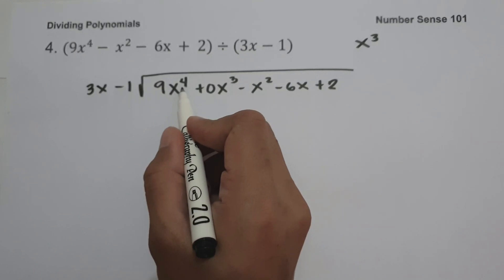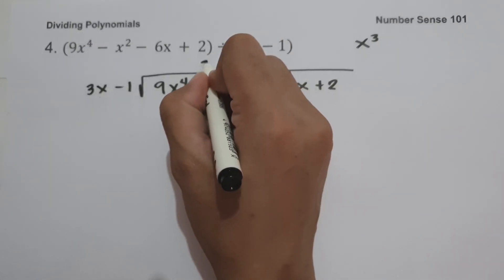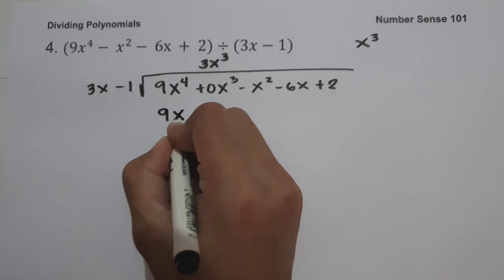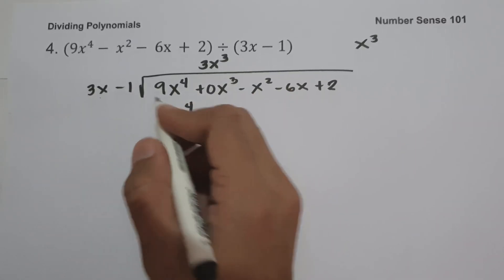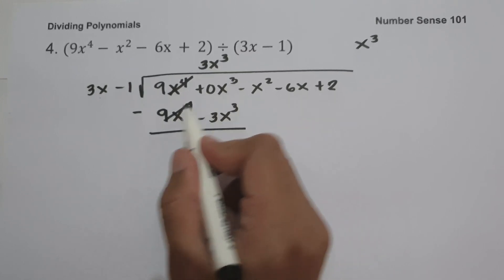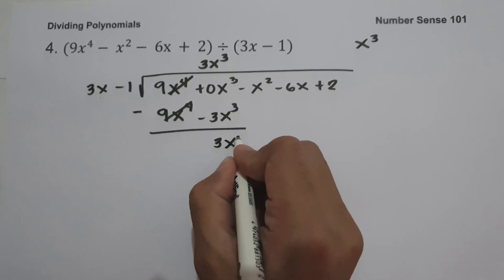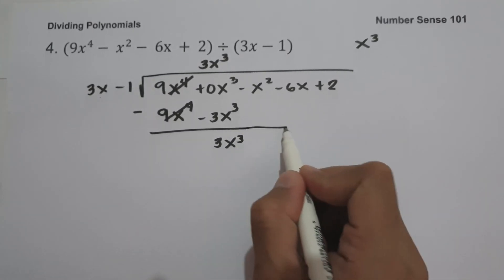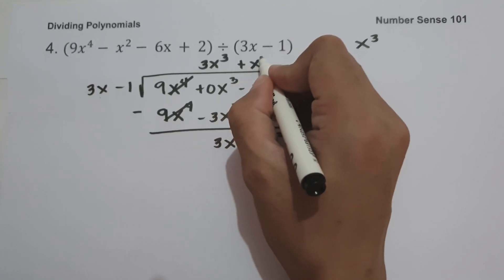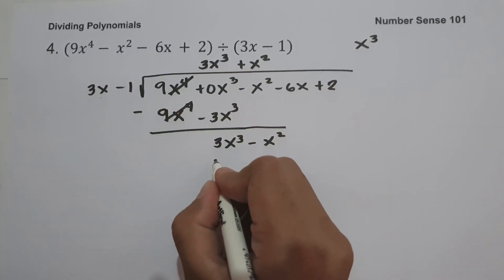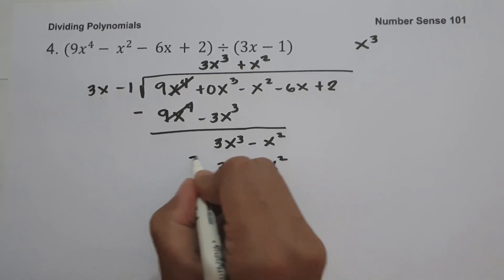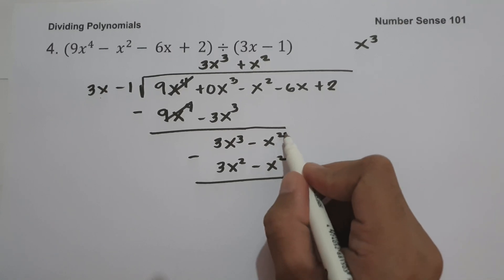So let us have 9x raised to 4 divided by 3x, which gives us 3x cubed. Then 3x cubed multiplied by 3x is 9x raised to 4, and 3x cubed multiplied by negative 1 is negative 3x cubed. Subtracting: 0x cubed minus negative 3x cubed gives us positive 3x cubed. Then 3x cubed divided by 3x is x squared. And x squared multiplied by 3x is 3x cubed, and x squared multiplied by negative 1 is negative x squared. Subtracting this gives us 0.